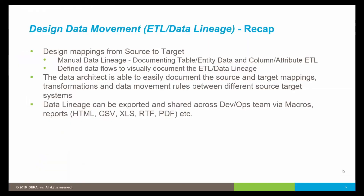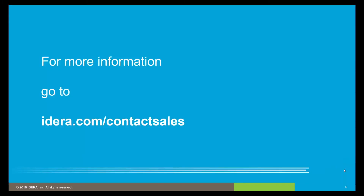To recap, we showed how you can design mappings from source to target using manual data lineage at the table and column level, and how you can define data flows to visually document ETL data lineage between different systems. The value for the data architect is the ability to easily document source and target mappings, transformations, and data movement tools between different systems, and to export and share data lineage information across development and operations teams via integrated macros and reporting tools. For more information, please visit idera.com and contact sales.